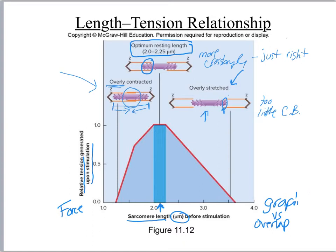On the overly stretched side, the sarcomere has too little ability to shorten because it's not going to reach the middle before the signal runs out. But in the optimal state, you have the optimal distance to overlap in order to fully use the nervous signal to its maximum.